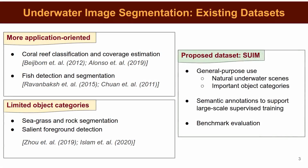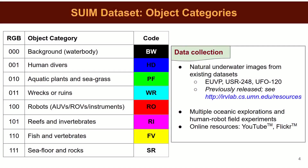We attempt to address these limitations in the proposed SWIM dataset. It contains a large collection of natural underwater images and semantic annotations for important object categories. We also provide benchmark evaluations for various state-of-the-art models on this dataset. Specifically, we consider object categories for fish, reefs, aquatic plants, and wrecks or ruins, which are primary objects of interest in many underwater exploration and surveying applications.